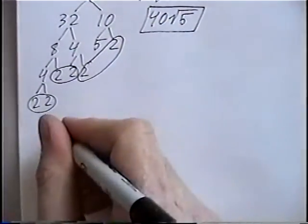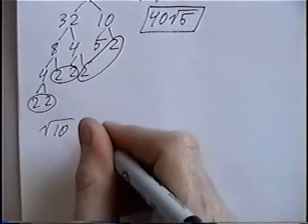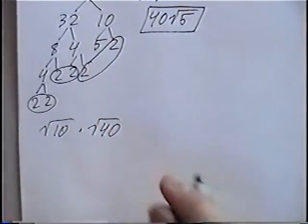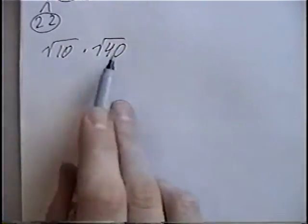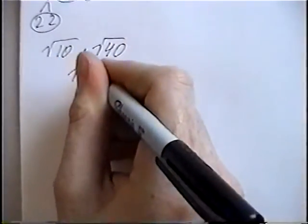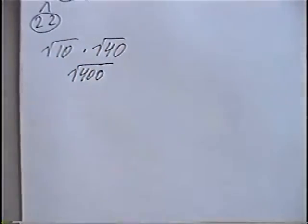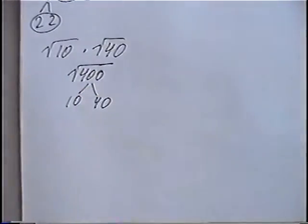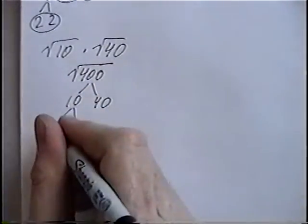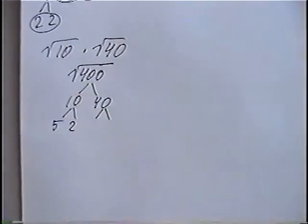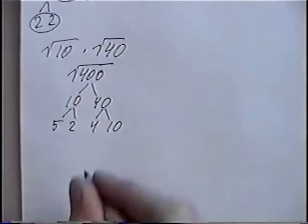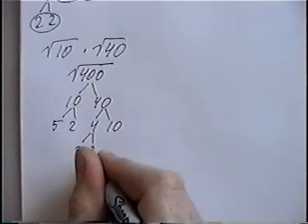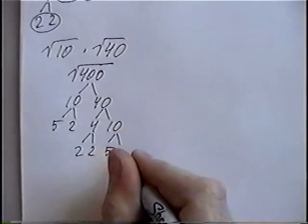The next question is radical 10 times radical 40. When you have two radicals, you can multiply them together: 10 times 40 is 400, and you can put it under one radical. From there you can do a factor tree, using the same two numbers — 10 times 40. 10 factors into 5 times 2. 40 factors into 4 times 10; the 4 is 2 times 2, and the 10 is 5 times 2.